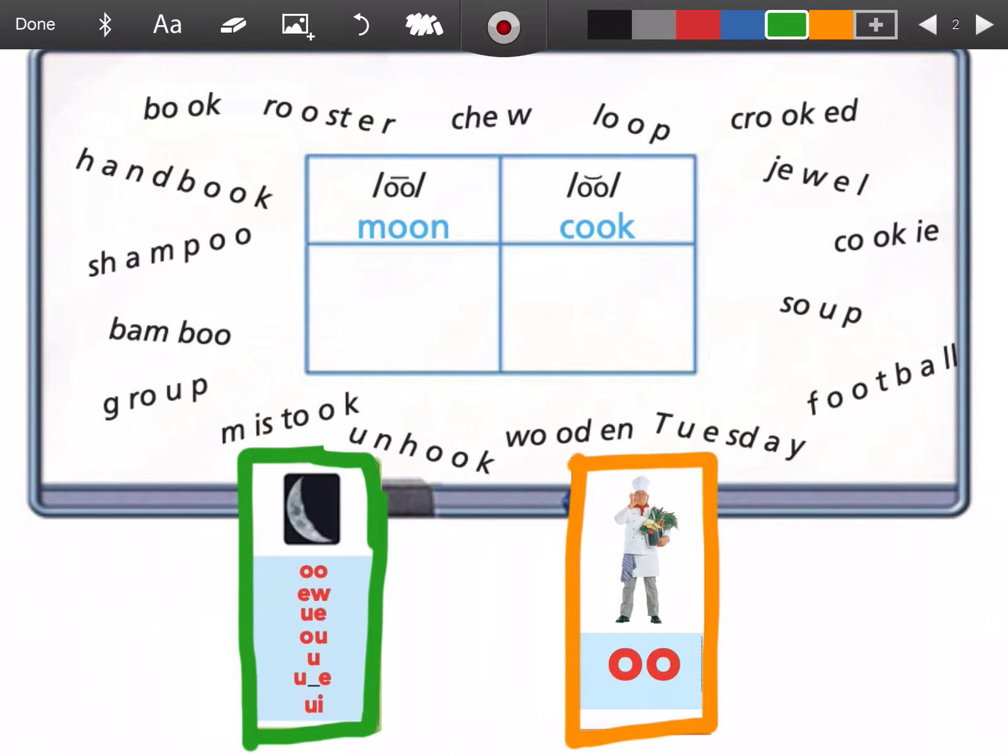Here we go. First word, over here, let's start with top left. This word right here. Buh. Uh. Buh. Cuh. Book. Book has the sound uh like the cook card. So I circled it with orange.